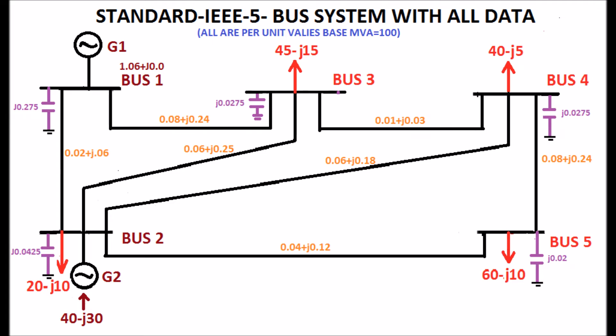There are seven lines. The line data is also marked. Two generator buses and three load buses.